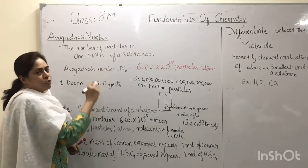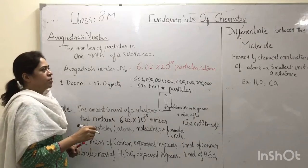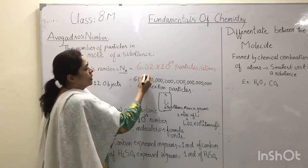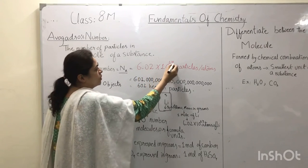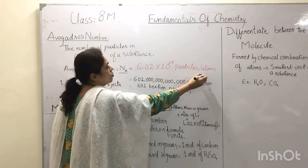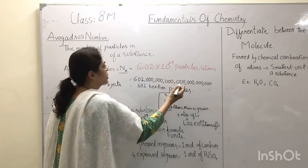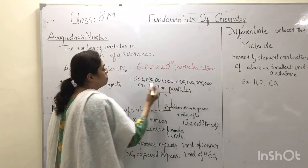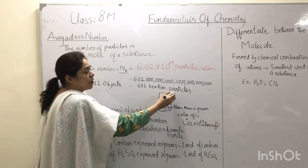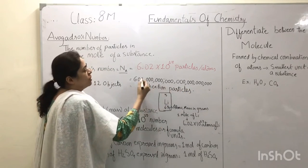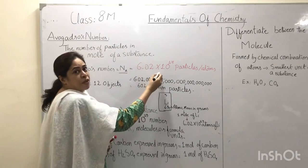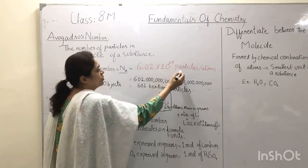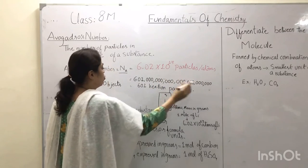Avogadro's number is the number of particles in a mole of a substance and it is noted by Na. The number of particles would be 6.02 × 10²³ particles, atoms, or molecules. This is a very huge number, which would mean 600 sextillion particles. So we write it in scientific notation, shortened as 6.02 × 10²³ particles, atoms, or molecules.